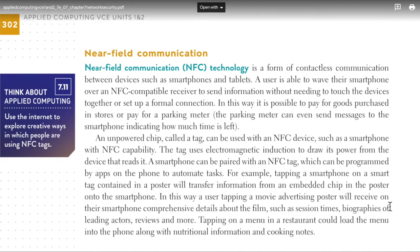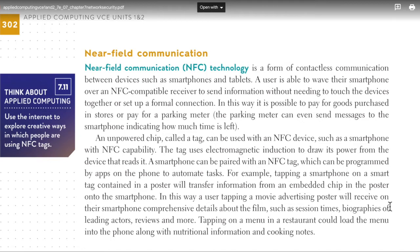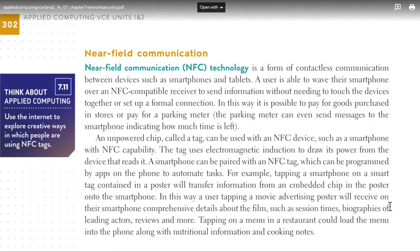The parking meter can even send messages to the smartphone indicating how much time is left. An unpowered chip called a tag can be used with an NFC device such as a smartphone. The tag uses electromagnetic induction to draw its power from the device that reads it. A smartphone can be paired with an NFC tag which can be programmed by apps on the phone to automate tasks. For example, tapping a smartphone on a smart tag contained in a poster will transfer information from an embedded chip in the poster onto the smartphone.